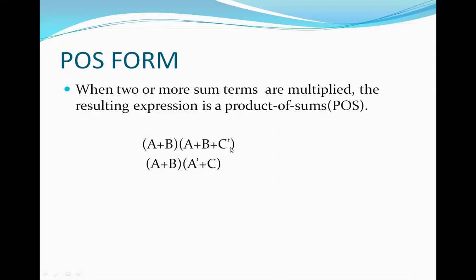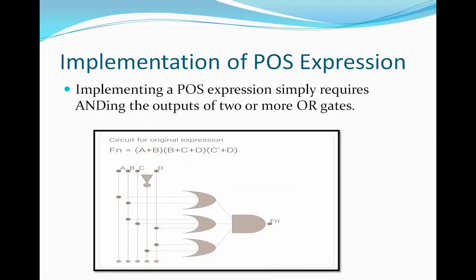First, what is POS form? When two or more sum terms are multiplied, the resulting expression is a Product of Sums. For example, A or B, multiplied by A or B or C-complement. This expression contains two terms: the first term is A or B, and this term is multiplied with the other term A or B or C-complement. The expression is in POS form because the individual terms are connected by OR, and the terms themselves are multiplied together. Implementing a POS expression simply requires adding the outputs of two or more OR gates.